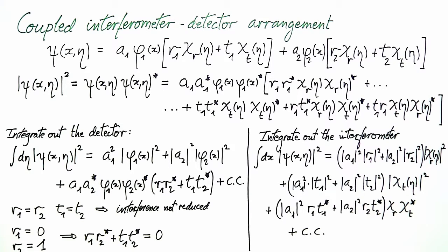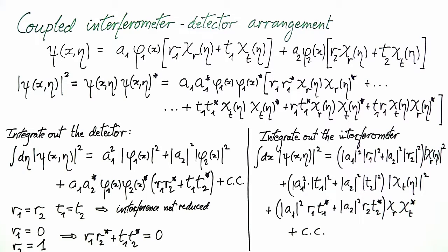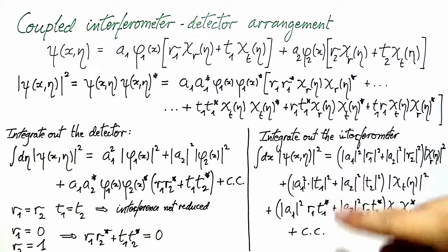We recognize essentially three terms. The first has a prefactor multiplying the square of the wave function describing a reflected electron, which we interpret as the reflection probability. The next term gives a transmission probability. The third is an interference term which is sensitive to the difference in phase between reflection and transmission, for either case where the electron in the interferometer passes through arm number one or arm number two.